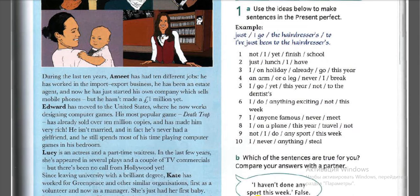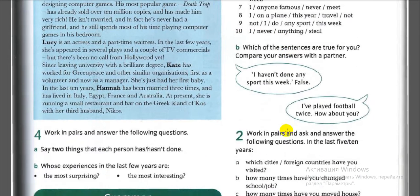Let's check the answers. One: I haven't finished school yet. Two: I've just had lunch. Three: I've already been on holiday this year. Four: I've never broken an arm or a leg. Five: I haven't been to the dentist's yet this year. Six: I haven't done anything exciting this week. Seven: I've never met anyone famous. Eight: I haven't travelled on a plane this year. Nine: I haven't done any sport this week. Ten: I've never stolen anything.